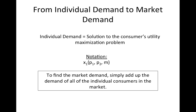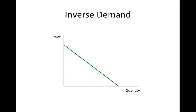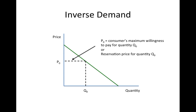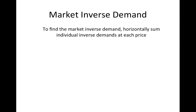To find the market demand for good one, simply add up all of the individual consumer demands for that good. When we conduct graphical analyses of market outcomes, we usually use the inverse demand function. The inverse demand function represents price as a function of quantity. One way to think about the inverse demand function is that it represents a consumer's maximum willingness to pay, or reservation price, for a given quantity of a good. To find the market inverse demand function, simply horizontally sum all of the individual inverse demand functions.